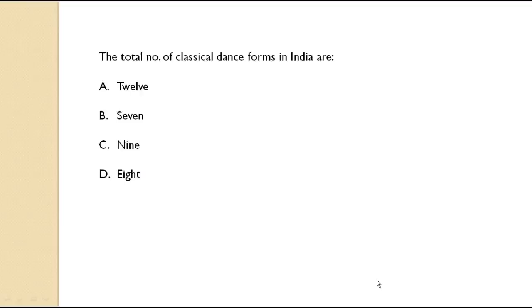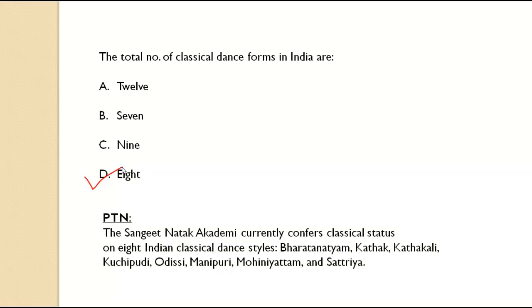The first question: what is the total number of classical dance forms in India? The answer is 8. The Sangeet Natak Akademi currently confers classical status on eight Indian classical dance styles: Bharatanatyam, Kathak, Kathakali, Kuchipudi, Odissi, Manipuri, Mohiniyattam, and Sattriya. So remember, there are eight classical dance forms in India.